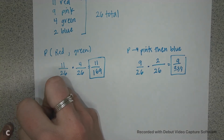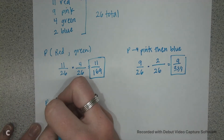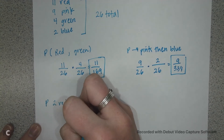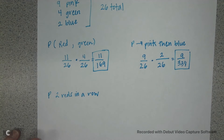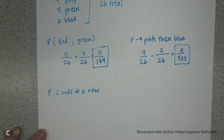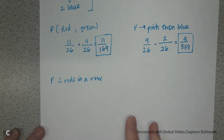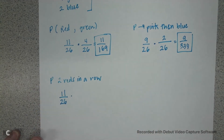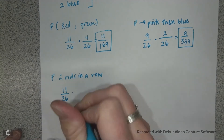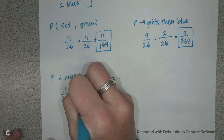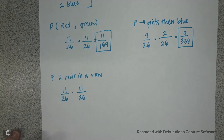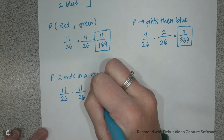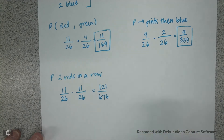Now let's do the probability of getting two reds in a row. The red probability is 11/26, and then I put my Jolly Rancher back in my bag and I still have an 11/26 chance of getting a red Jolly Rancher. When I multiply and reduce, I get 121 over 676 — I don't think that reduces.